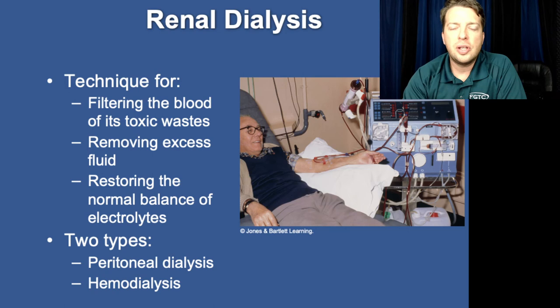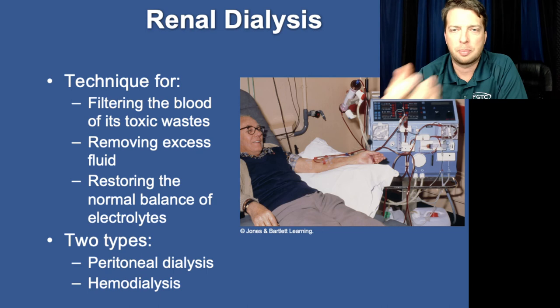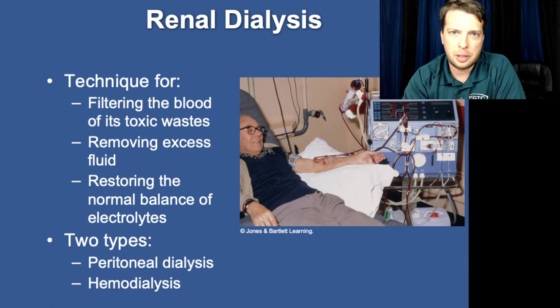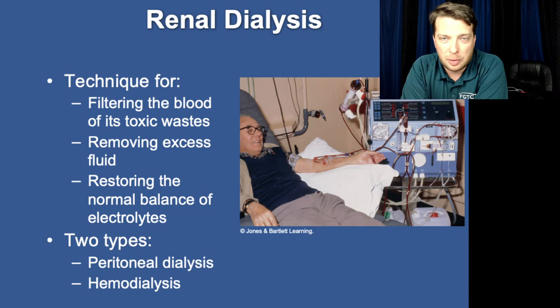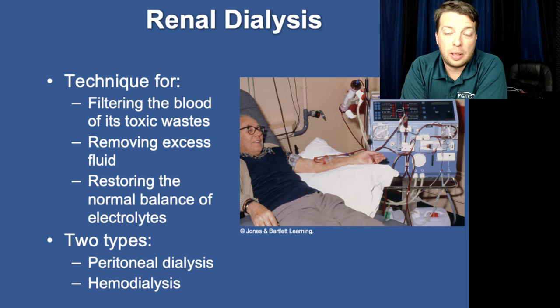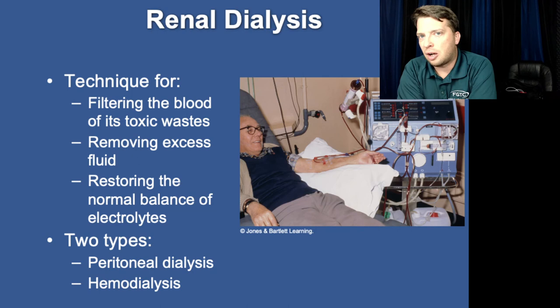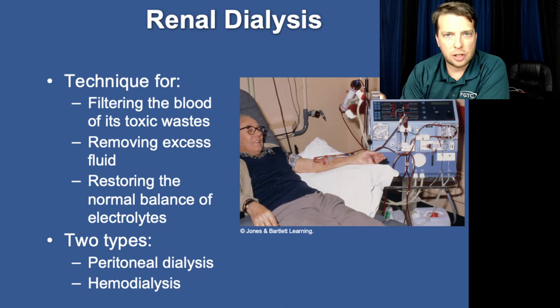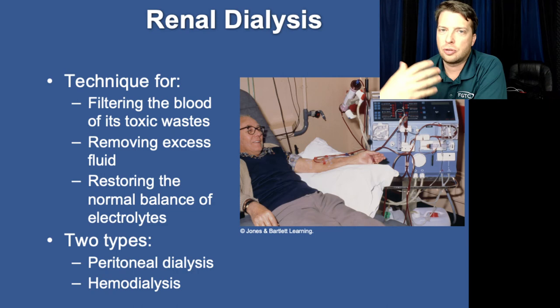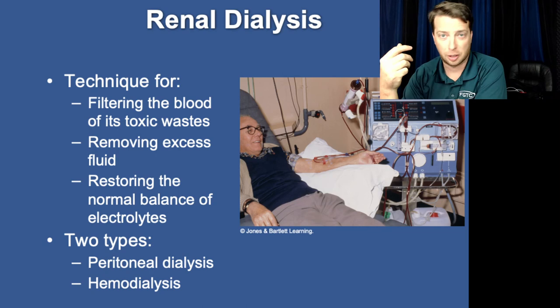Peritoneal dialysis, on the other hand, is a process where a needle is placed through a port — generally a med port — and fluid is pumped into the abdomen into the free space surrounding the peritoneal lining, specifically the mesentery. This fluid has a very different tonicity from the blood because the blood is full of extra chemicals and waste products. Fluid is pumped in, sits there for a bit, and waste products move by diffusion from the blood of the mesenteric tissue into the fluid. Then the fluid is sucked back out and fresh fluid is placed.